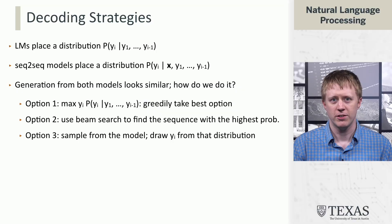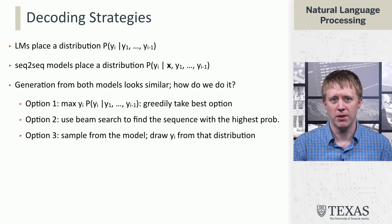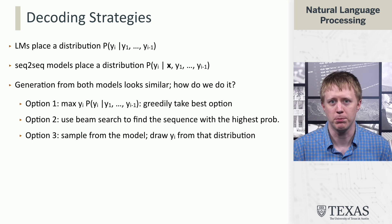In this segment, we're going to talk about sampling strategies for generating text from language models. Previously, we talked about strategies around taking the most likely next token, and then we looked at using Beam Search to find an even higher probability sequence. But the third option we outlined before was to draw a random sample from the model.